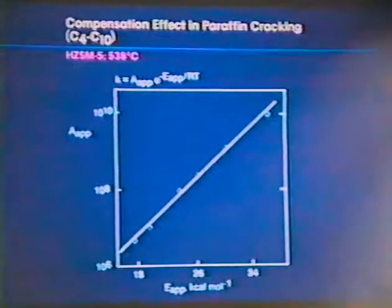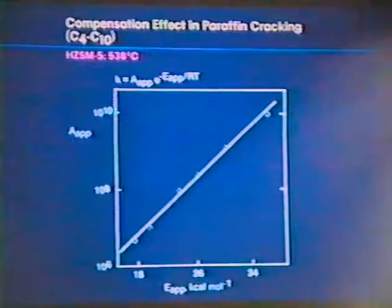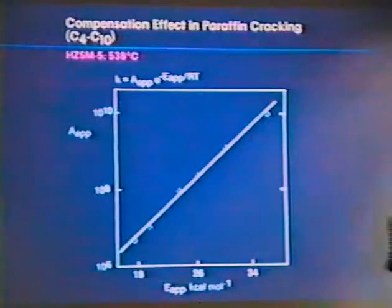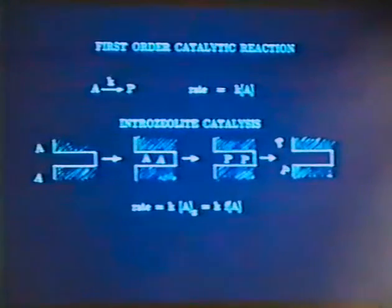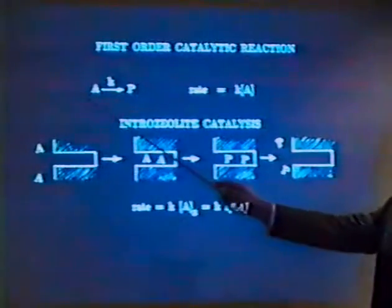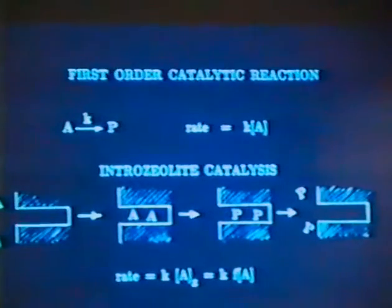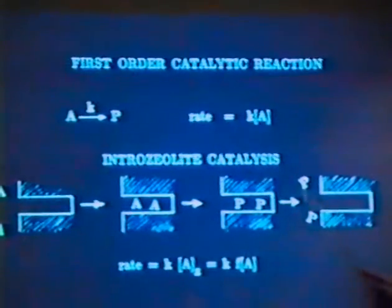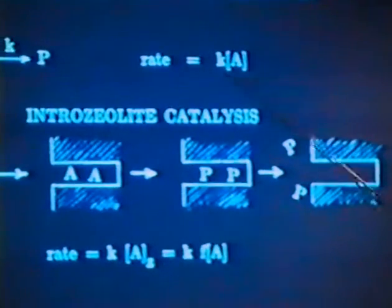We are just treating it, we are getting a first order rate constant out. Next slide. We really shouldn't do that. We are treating it as if A goes to product, and a rate constant describes this whole process. And so, we get a rate, then we get a rate constant, and that describes the process. Which is true, it's an apparent rate constant. Of course, if we wanted to be more fundamental, and need to get our understanding, we really should sort this out. Then, species A has to diffuse into a zeolite, and there's an equilibrium sorption, and the sorption constant here becomes important.